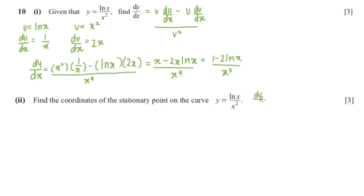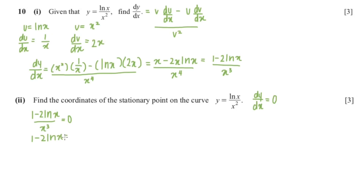We know that a stationary point means dy/dx equals 0. So we set 1 minus 2·ln(x) over x cubed equal to 0. Bringing x cubed to the other side gives 1 minus 2·ln(x) equals 0, so ln(x) equals 1/2.